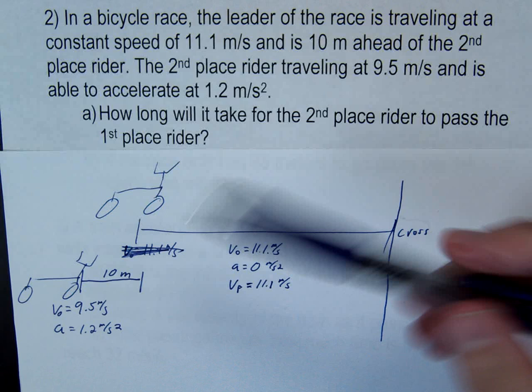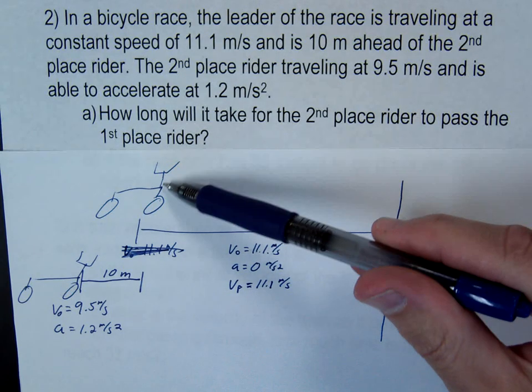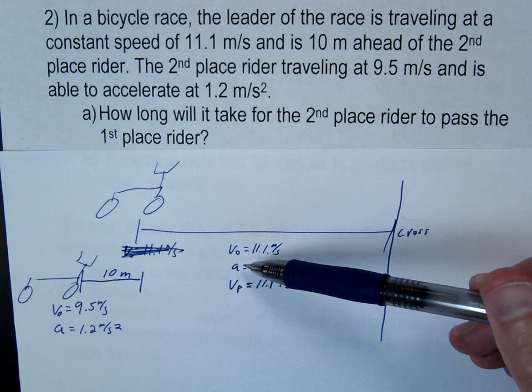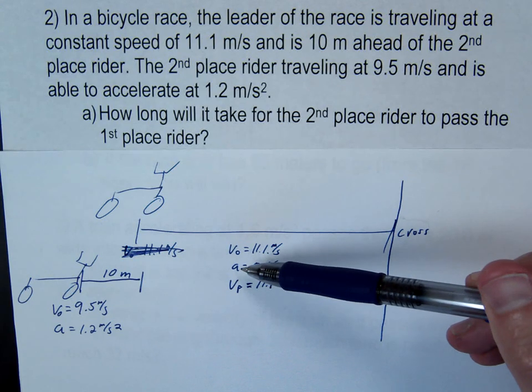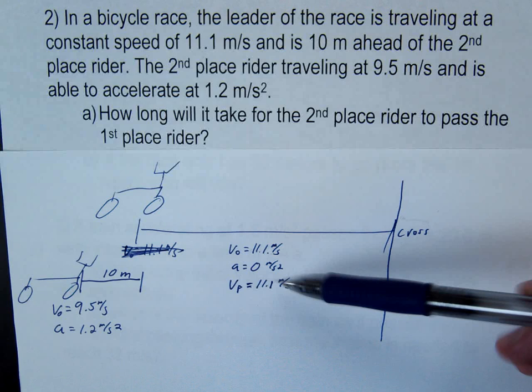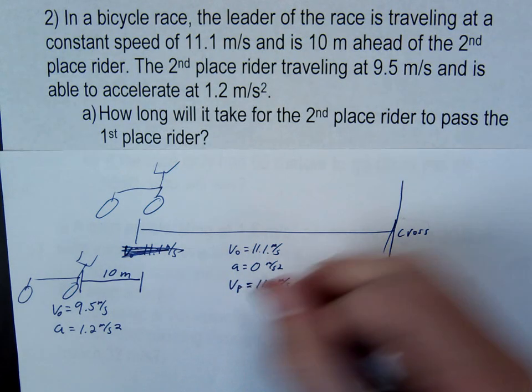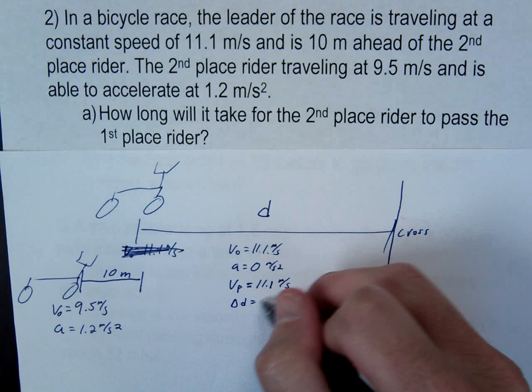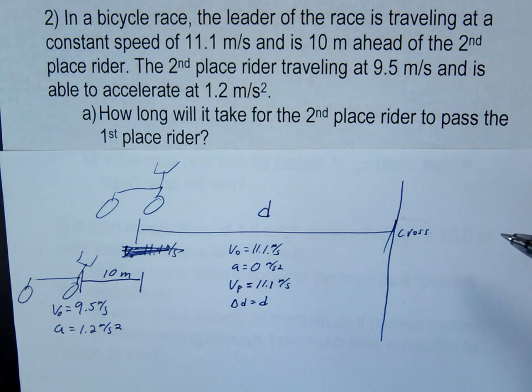So I have some givens here. I wrote the v initial for him is 11.1. And since it's a constant velocity, the acceleration is zero. So his v final is also 11.1. Now we don't know his distance. So let's just say d. That's how far he needs to go to reach the cross point when they pass.